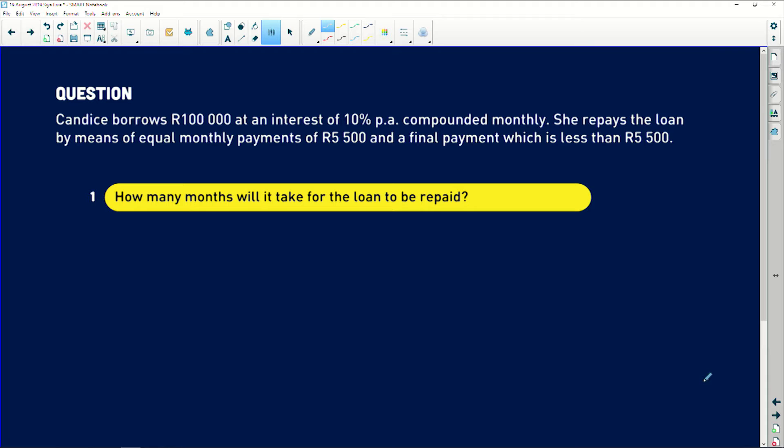Now, I'm going to read it and highlight the important things that you guys need. The first word is borrow. Therefore, I'm talking about present value. That's the first important thing. This R100,000 will be the present value that she is borrowing from the bank or rather from any institution for that matter.